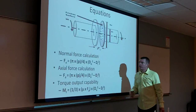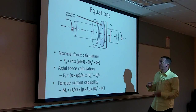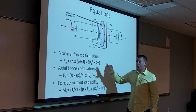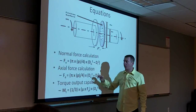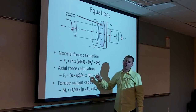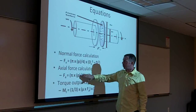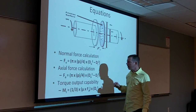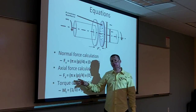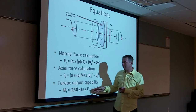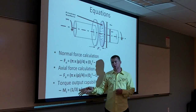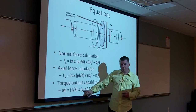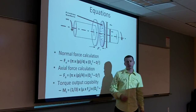The three main equations our system deals with are the normal force calculation and the axial force calculation. Both of these equations are exactly the same, considering a uniform pressure distribution along the clutch disc material. Once you have the axial force, you can apply it into the maximum torque equation. You also need to take into consideration the coefficient of friction.